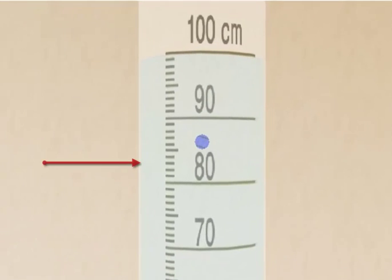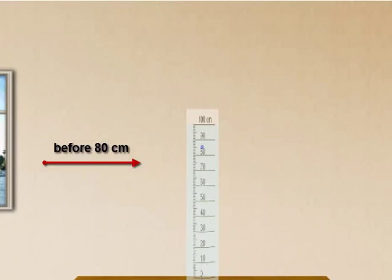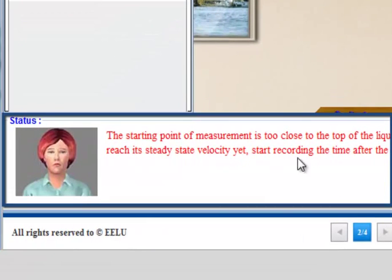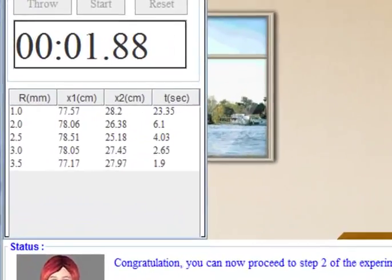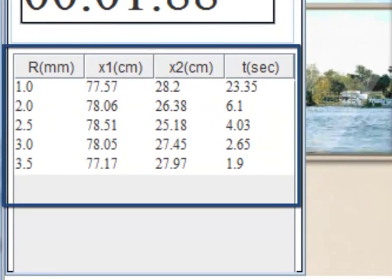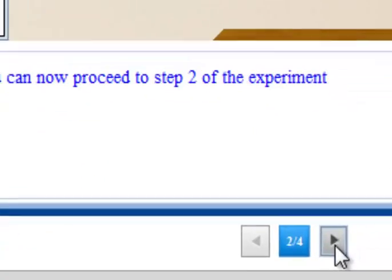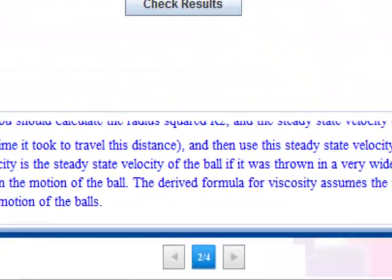If you start before 80 cm or stop before 30 cm, you will get an error message, so you need to click Reset button. After completing the five trials correctly, you can go to step 2 by clicking Next in the footer part.